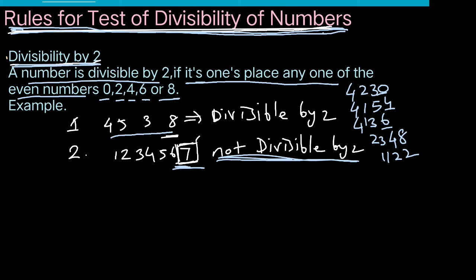Divisibility by 2: a number is divisible by 2 if its ones place has any one of the even numbers, that is 0, 2, 4, 6, or 8. This is the unit place.